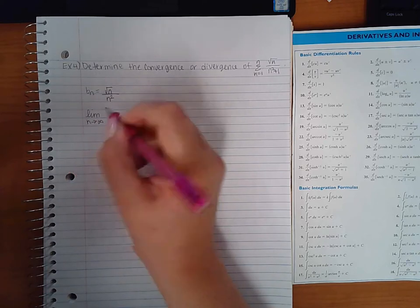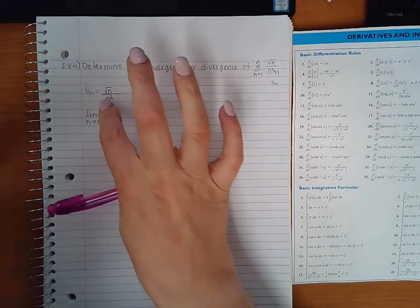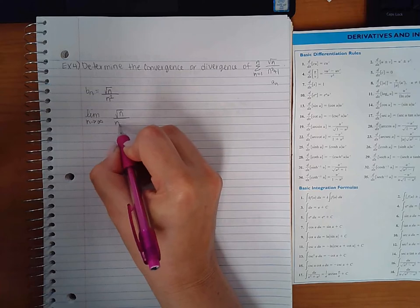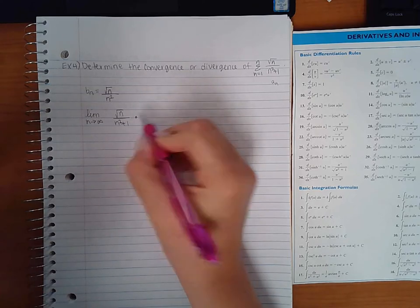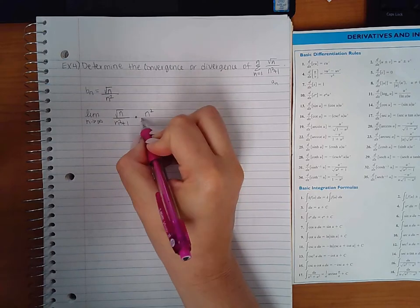So let's take the limit as n goes to infinity of a_n, which is the original, over the b_n I'm comparing it to. So square root of n over n squared plus 1 times the reciprocal of this, which is the same as dividing by it.